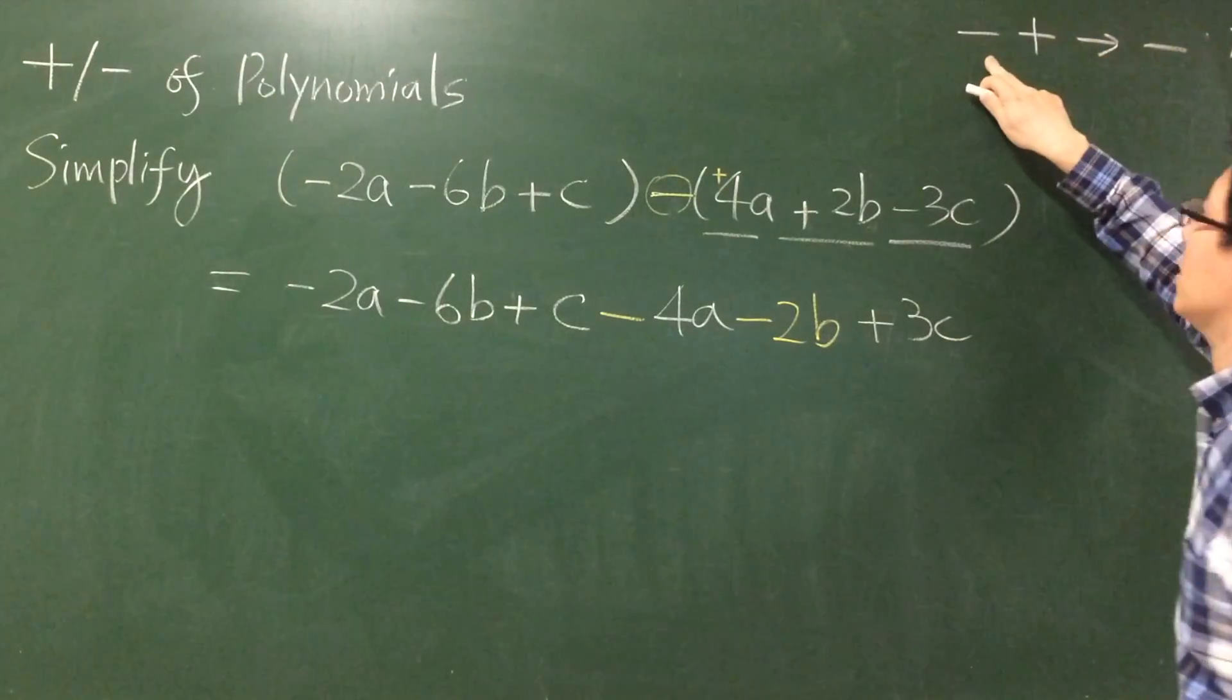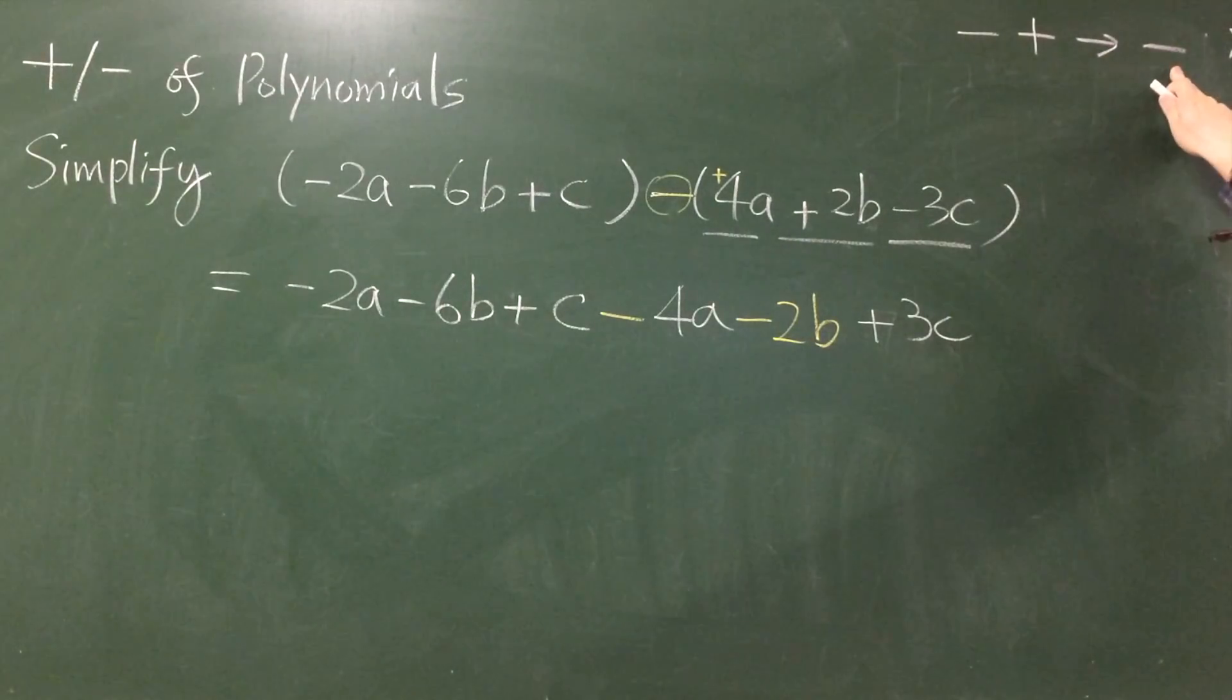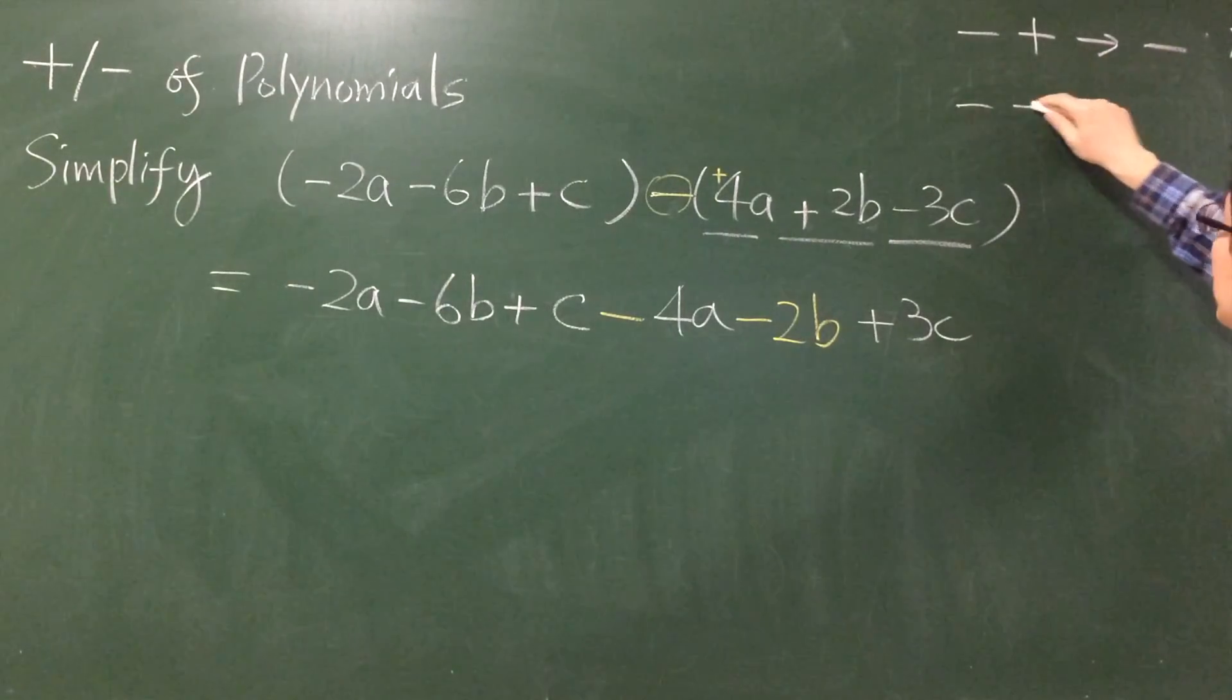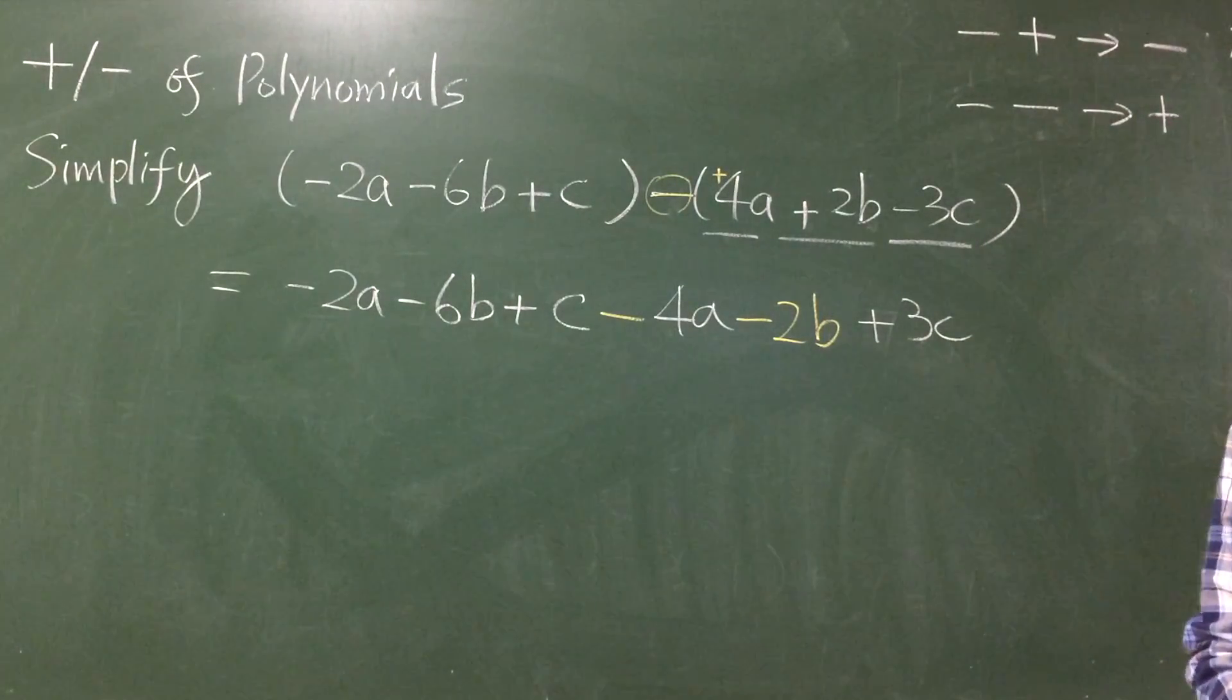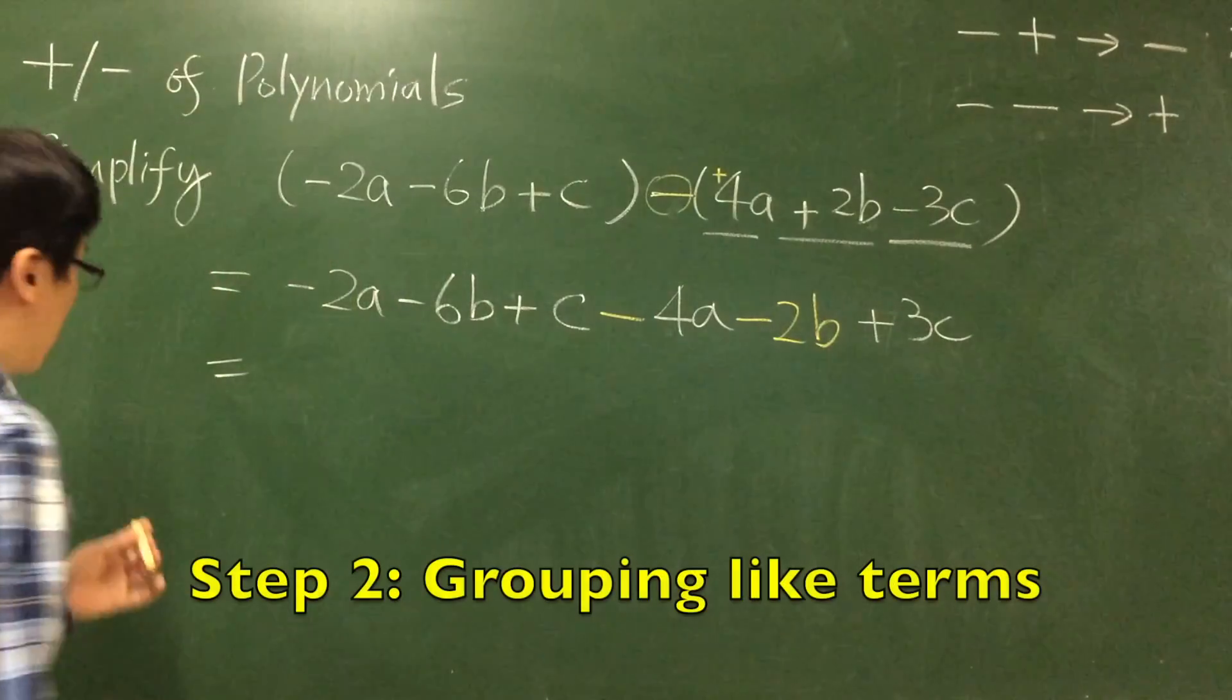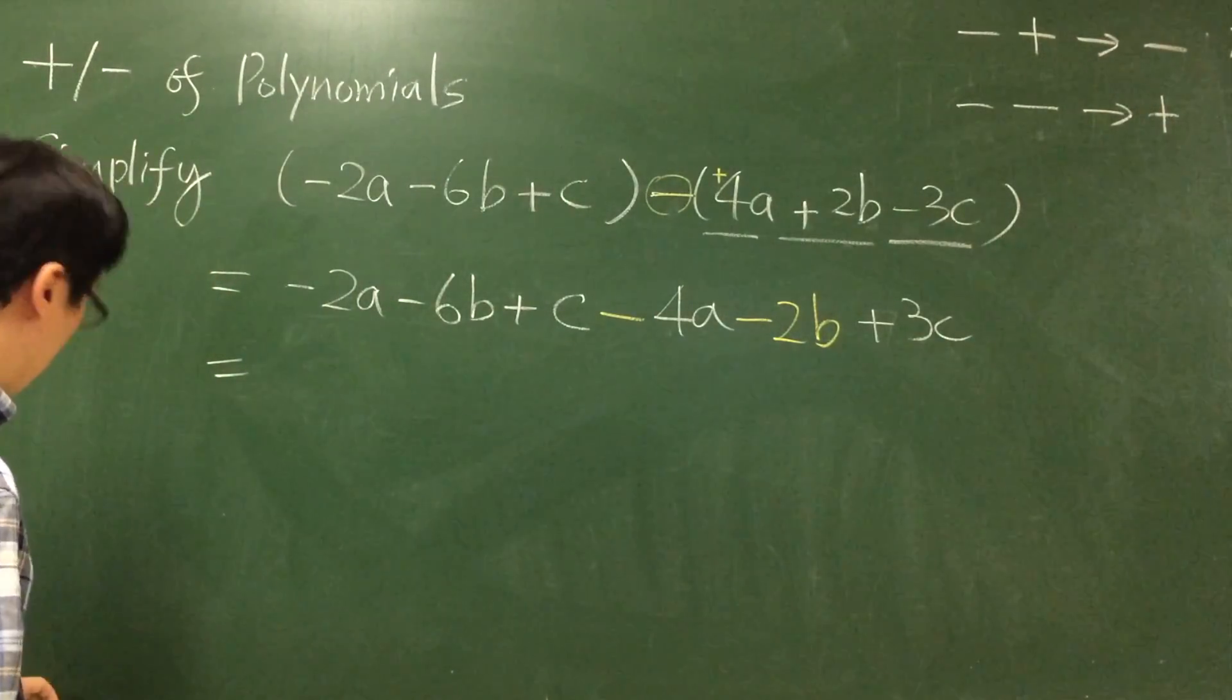So we have to remember this rule again. If the signs are different then you always get a negative value. If you have the same sign you get a positive value.